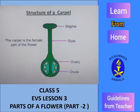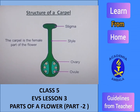The carpel is divided into three parts. At the top, there is stigma, which is attached to the tube-like structure called style, and at the bottom there is a swollen part called ovary, which contains ovules.